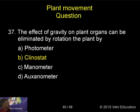The effect of gravity on plant organs can be eliminated by a rotation of the plant by: photometer, plenostat, manometer, or axonometer.